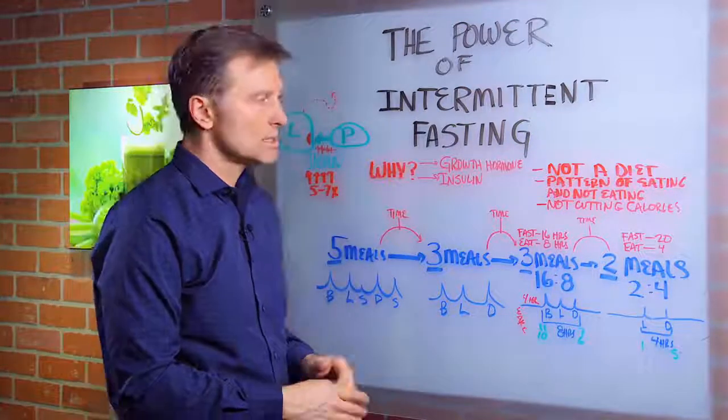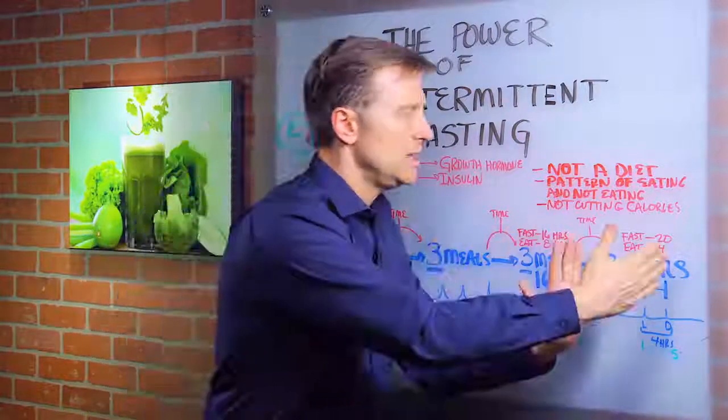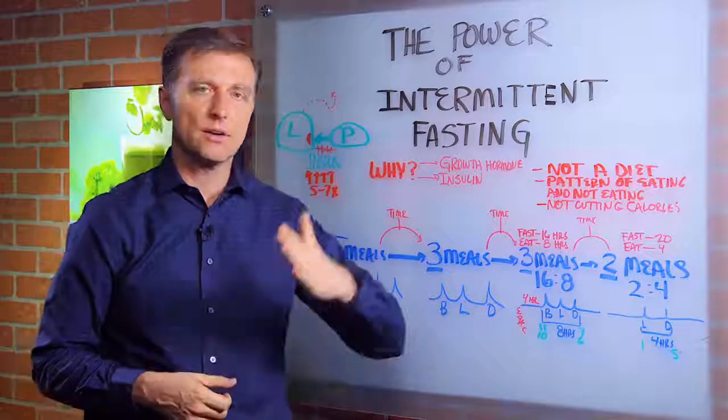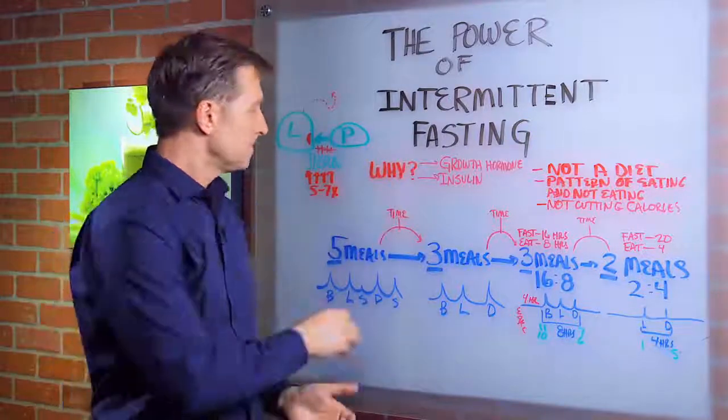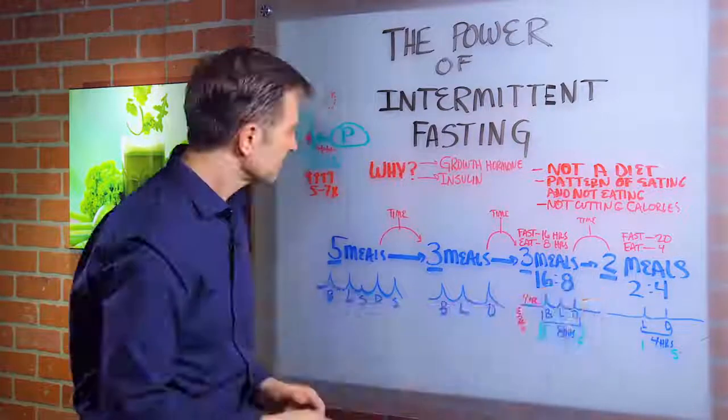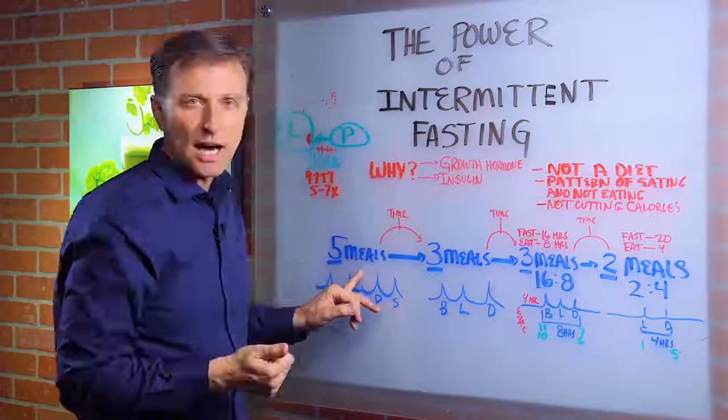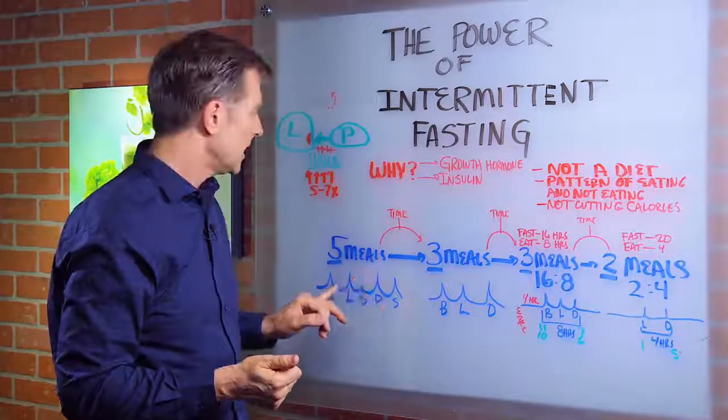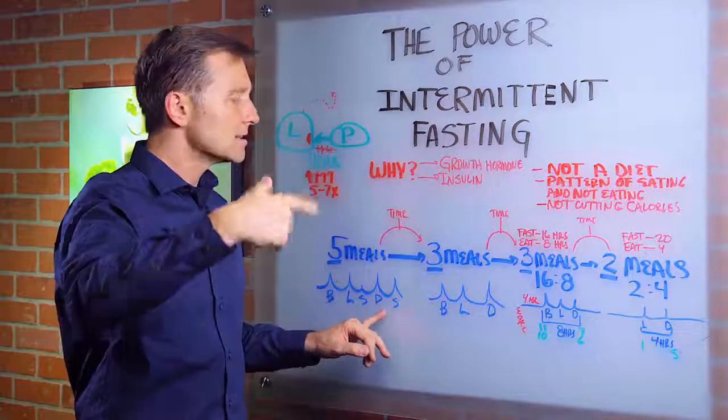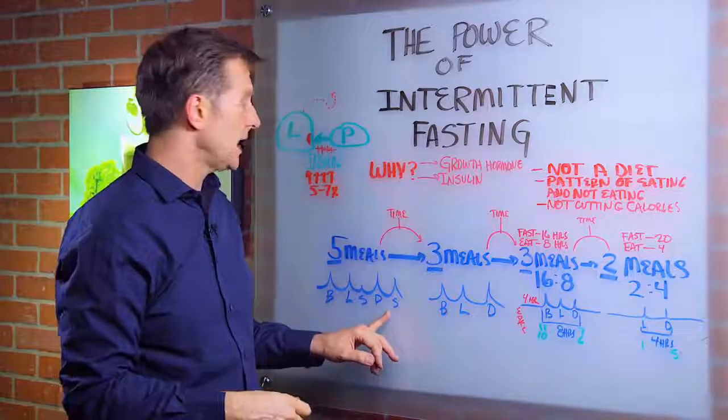So what we want to do is you want to start where you're at and then graduate this way over time. It's kind of like there's different levels of intermittent fasting from not intermittent fasting to some serious fat burning over here. So let's say you start with five meals a day or six meals a day. You have breakfast, lunch, snacks. Some people do breakfast, snack, lunch, snack, dinner, snack, right? That's a lot of people that do that.